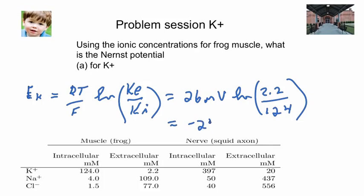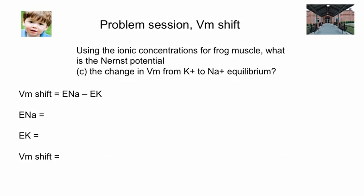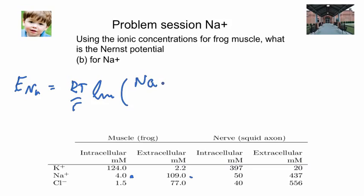If we ask the same question for sodium, the question is answered by substitution of the sodium concentrations for frog — 4 and 109 — into the same basic equation. The equilibrium potential is now denoted ENa. It's the transmembrane potential at equilibrium for sodium, and that'll be RT over F. I'll leave it up to you to determine the actual number, but we're expecting a positive number this time because NAe is greater than NAi.